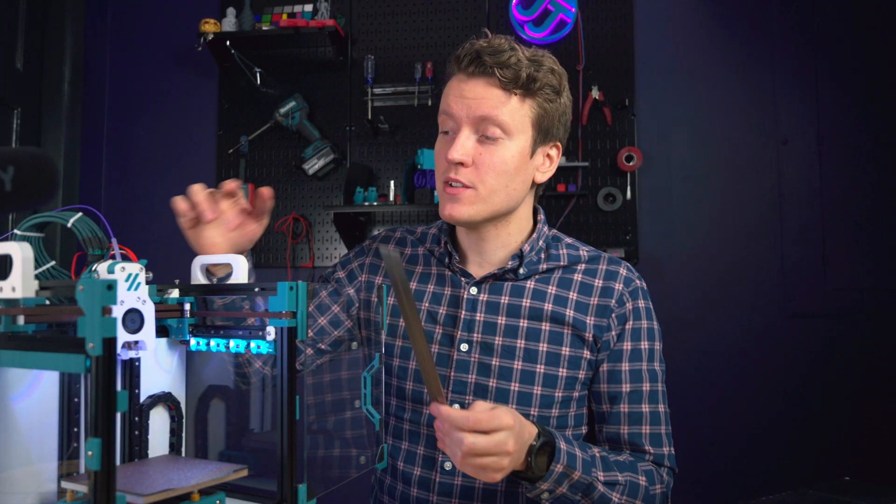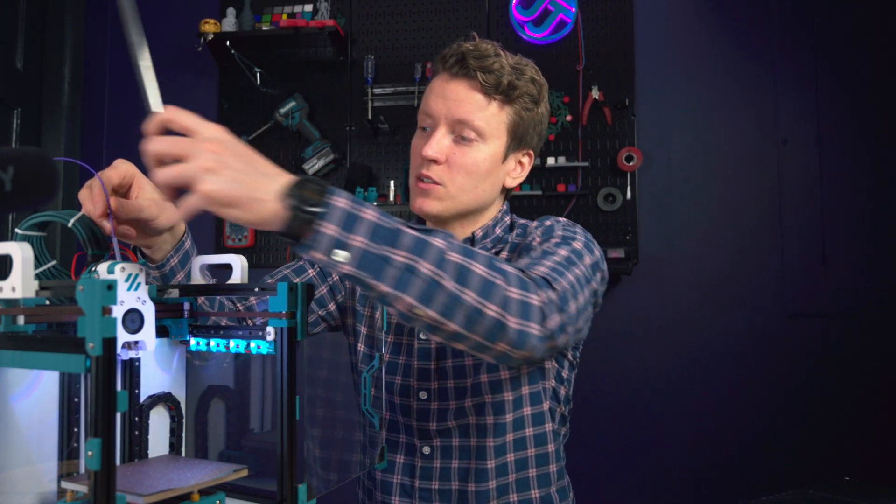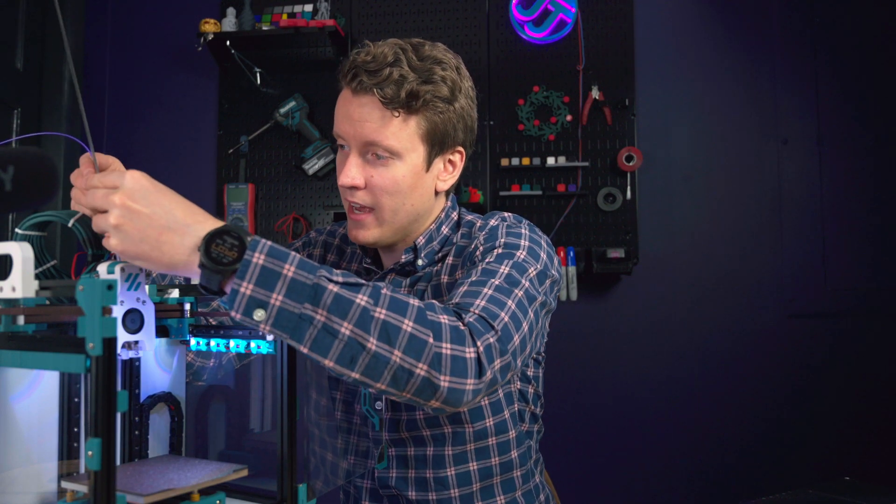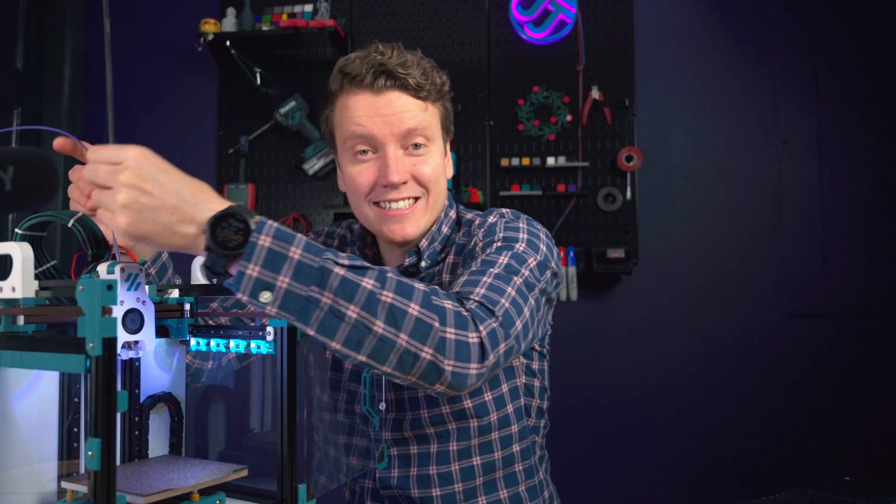So now you can measure the distance from your mark on the filament to wherever you started from. And I'm measuring right at 18 millimeters. So the reason I put this whole part before any of the other parts is because if you were to measure a perfect 20 millimeters right there, that means your extruder is pretty spot on calibrated. You don't need to move forward with any of the other steps. But since I did measure 18 and not 20 millimeters, we can move forward.